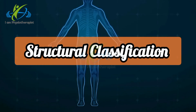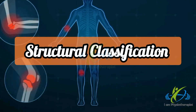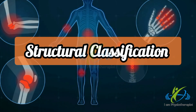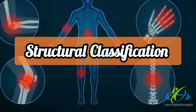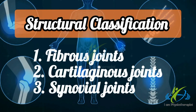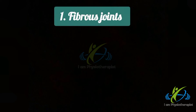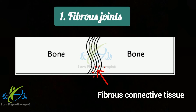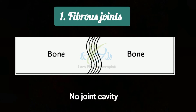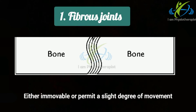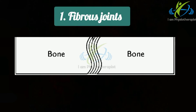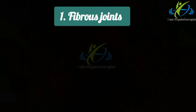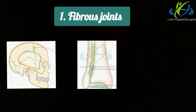Structural classification is based on the type of connective tissue and presence or absence of the joint cavity. According to structural classification, joints are classified into three types: fibrous joints, cartilaginous joints, and synovial joints. In fibrous joints, bones are connected by fibrous connective tissue. Fibrous joints have no joint cavity and are either immovable or permit a slight degree of movement. Fibrous joints are further classified into three types: sutures, syndesmosis, and gomphosis.